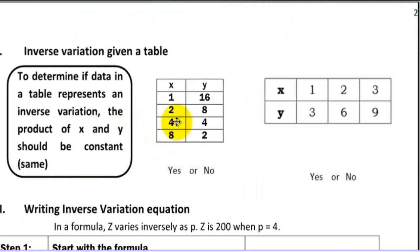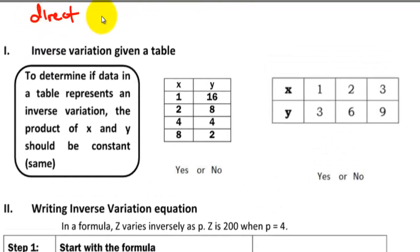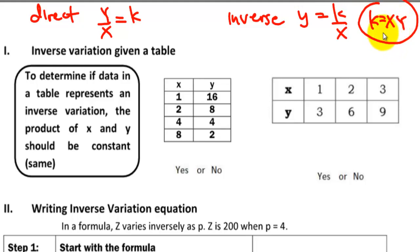So if we have a table, how do we know if we have inverse variation? For direct variation, we divide y by x and check for the same K. For inverse variation, the equation is y equals K divided by x, and K is the product of your two variables x times y. So we are going to multiply x and y, and if we have the same K, then that table represents inverse variation. Let's check the first table.